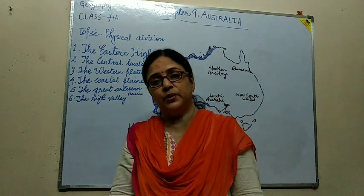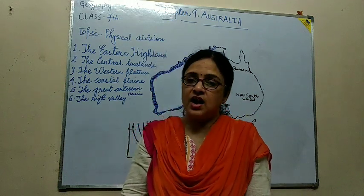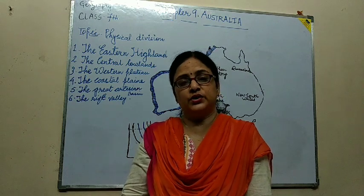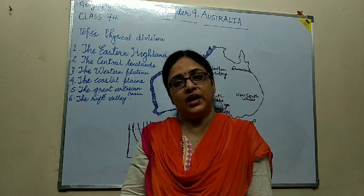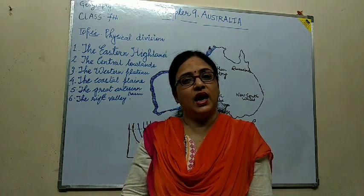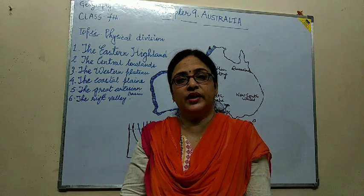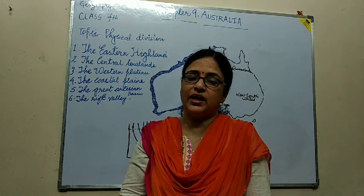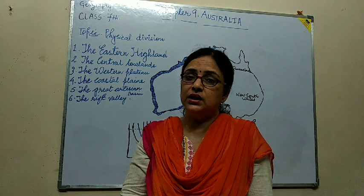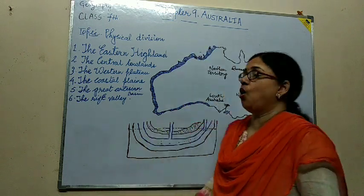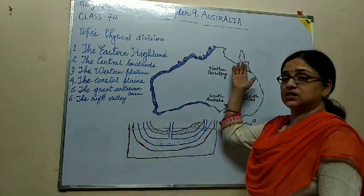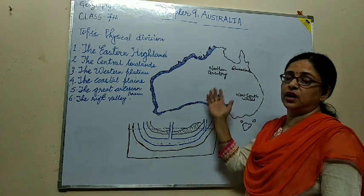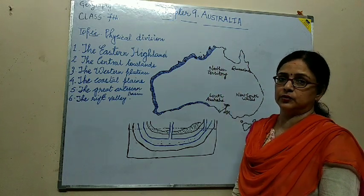The Great Artesian Basin of Australia is the largest underground water reservoir in the world. It covers an area of more than 1.7 million square kilometers beneath the arid region of the states Queensland, New South Wales, South Australia and the Northern Territory.